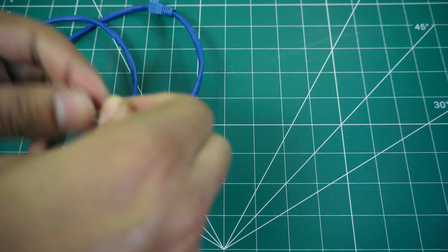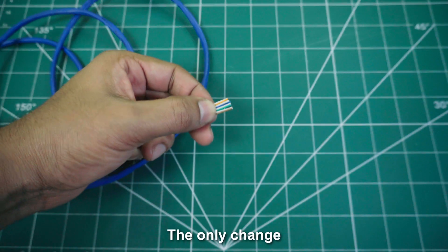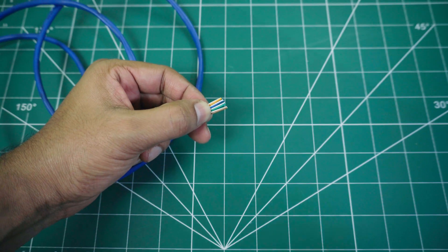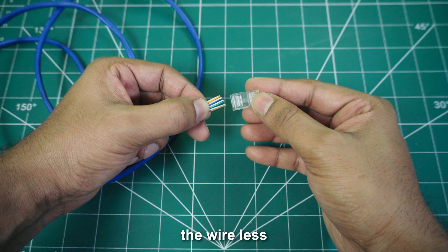For people using a regular or a non-pass-through connector, the only change you need to make is while snipping. Keep the length of the wire less than the connector length.